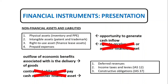Assets and liabilities relating to non-contractual arrangements that arise as a result of statutory requirements imposed by governments — such as income taxes and levies — are not financial liabilities or financial assets, because they are not contractual. Similarly, constructive obligations as defined by IAS 37 do not arise from contracts and are therefore not financial liabilities.